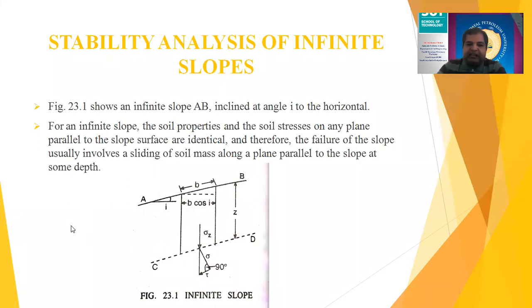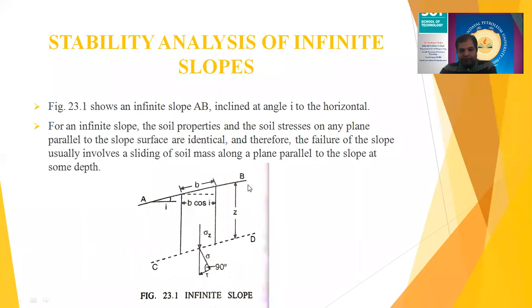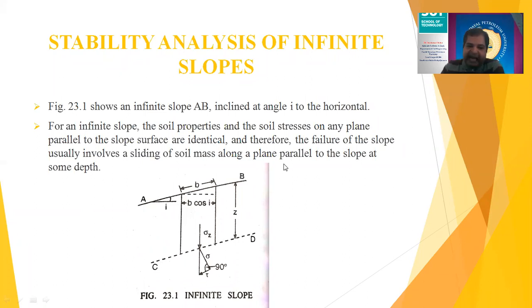Consider infinite slope AB inclined to the horizontal at angle I. For an infinite slope, soil properties and stresses on any plane parallel to the slope are identical. Therefore, failure usually involves sliding of the soil mass along a plane parallel to the slope at some depth Z. The sliding takes place along line CD at depth Z below the surface, parallel to the slope angle.